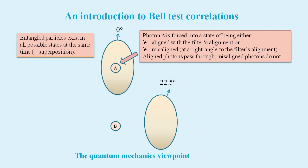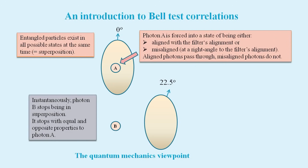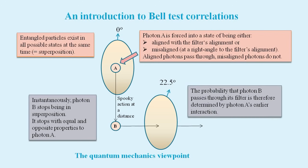As soon as the first particle hits its filter and is forced into one of two states, then instantaneously its entangled partner will end its superposition and it will somehow acquire equal and opposite properties. It is this mysterious communication between two different physical locations that Einstein called spooky action at a distance. The probability that B passes through its filter is therefore influenced by photon A's earlier interaction. This concept forms the basis of Bell test experiments.